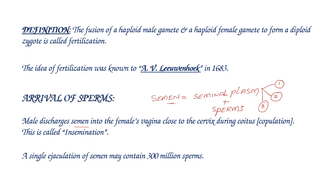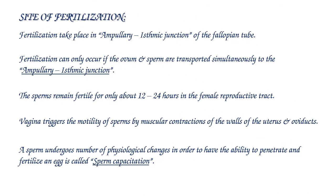A single ejaculation of semen may contain 300 million sperms. During insemination, semen is released into the female reproductive system. The site of fertilization is the ampullary-isthmic junction of the fallopian tube or oviduct. Fertilization can only occur if the ovum and sperm are transported simultaneously to the ampullary-isthmic junction.